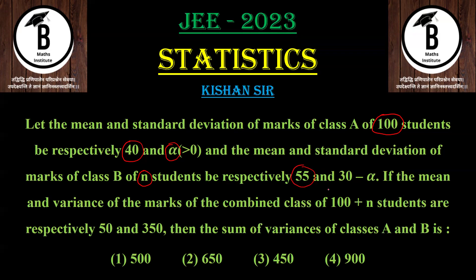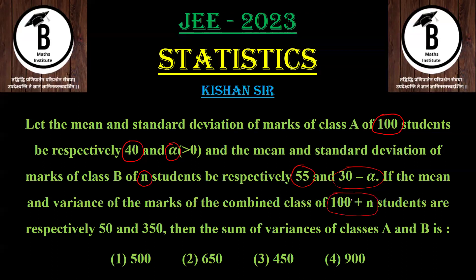Mean is given as 55 and standard deviation is given as 30 minus alpha for class B. If the mean and variance of marks obtained by the combined students are found — class A had 100 students, class B had n students, so total is 100 plus n — the combined mean is given as 50 and combined variance is given as 350.